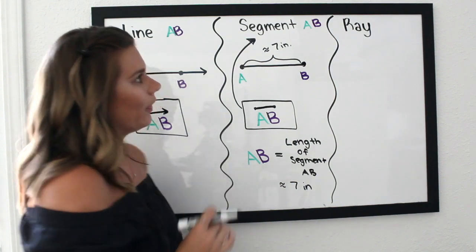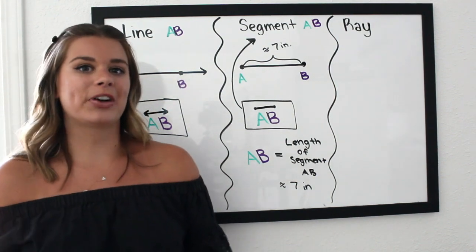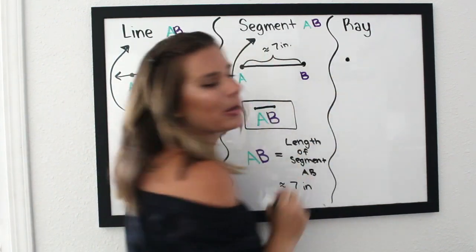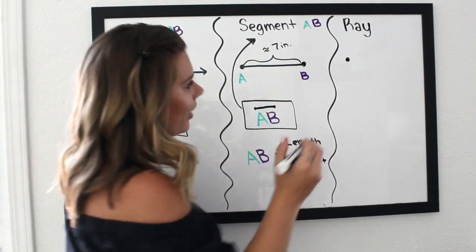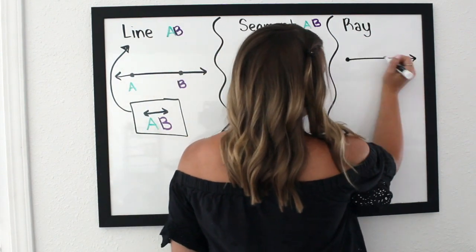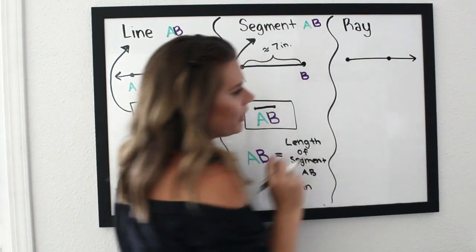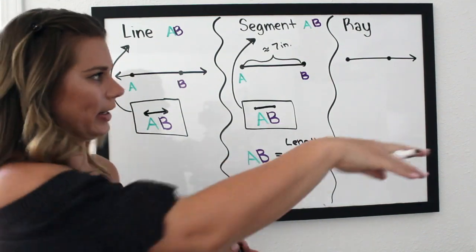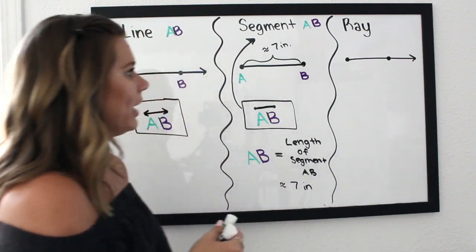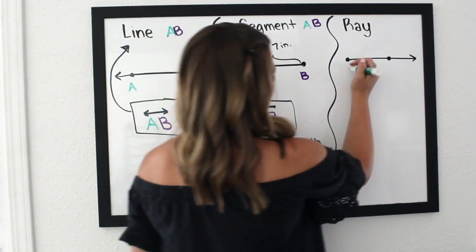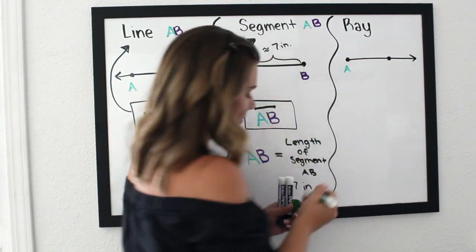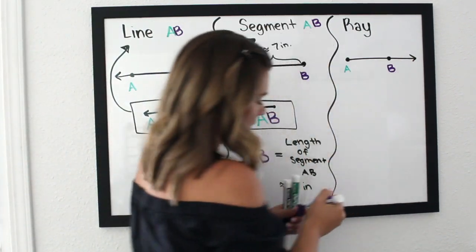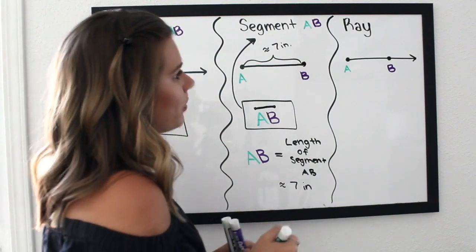The next notation is a ray. A ray has one stopping point but on the other side it keeps going. We still need two points to know the direction — we'll call the endpoint A and the point we go past B. This is ray AB.